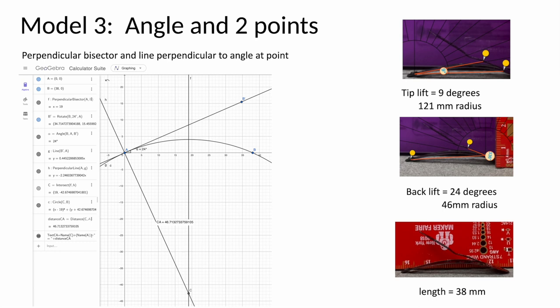This brings us to our third model, which is an angle and two-point. It's very similar to the three points, except of course we only have two points. The way we, in some sense, recover the information for this third point is, if we can assume that this angle is tangent to the circle, we can take the perpendicular line to it at the point where it should be tangent, and that line has to go through the center of the circle. And the perpendicular bisector, as we discussed before, also has to go through the center of the circle. So their intersection gives us a point. And we have two angles which we can do this with. We have the angle from the tip here is 9 degrees, and if we plug that in, we get 121 millimeter radius. And the angle from the back is 24 degrees, and we plug that in, we get 46 millimeter radius, and we're still using the length of 38 millimeters from before.